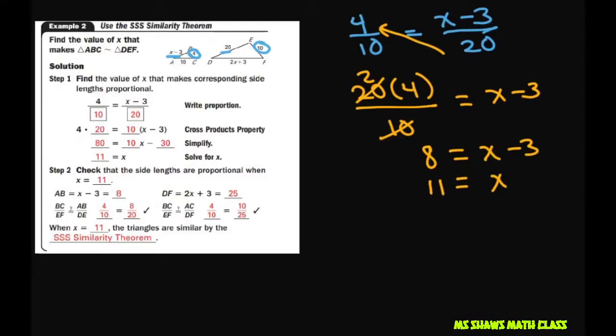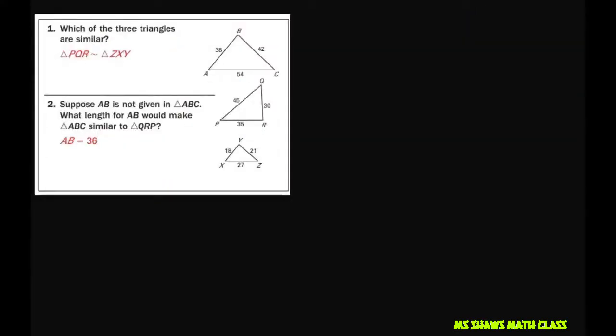And then what you do is you plug back 11 into the original triangles and check to see, check for proportionality. So TF would be 25, and if I plug in x back into here, 11 minus 3 would be 8, so this would be 8. When you check it all out, you can see that they're proportional. They're similar by the Side-Side-Side similarity theorem.